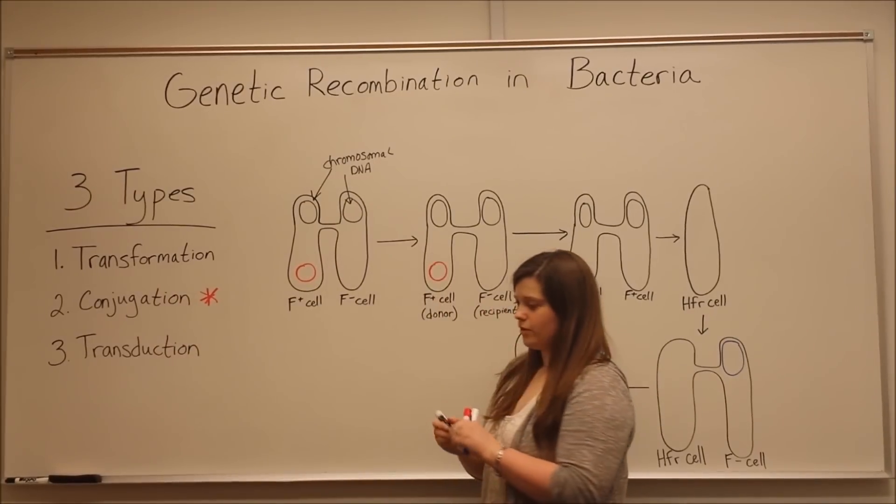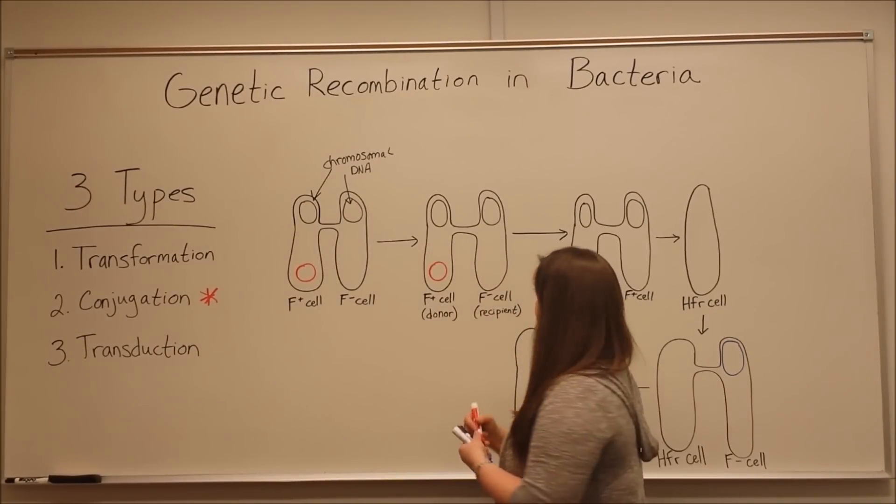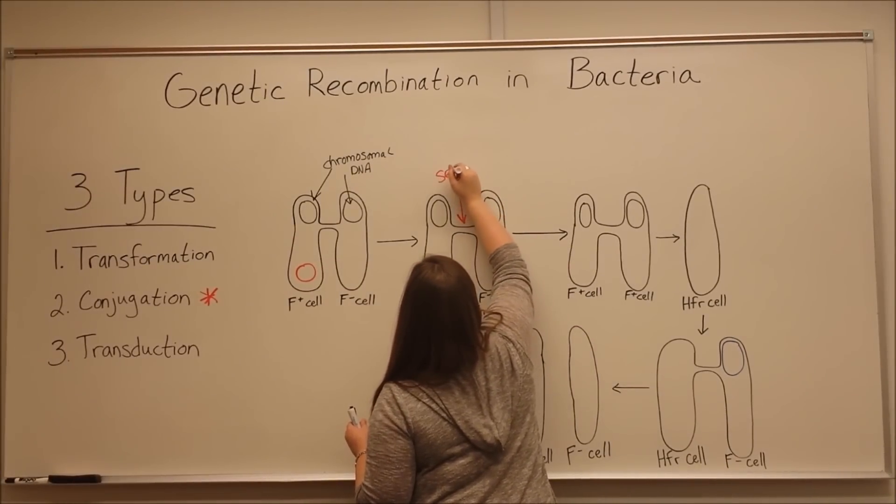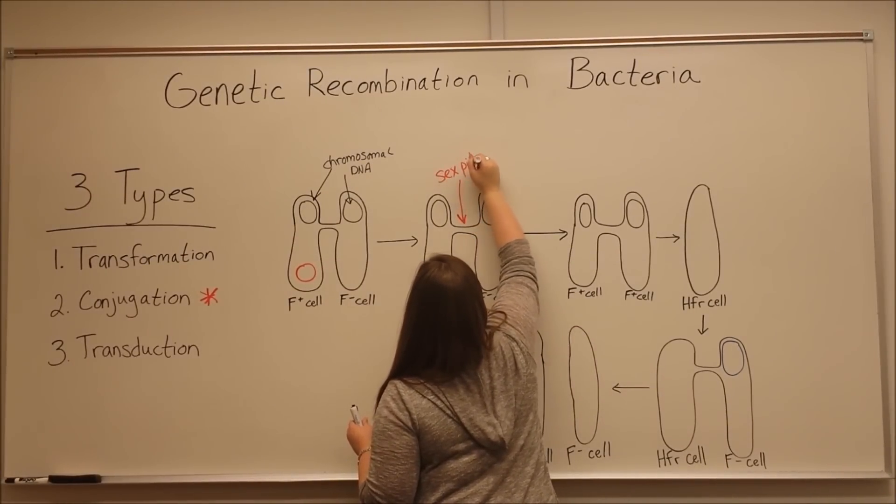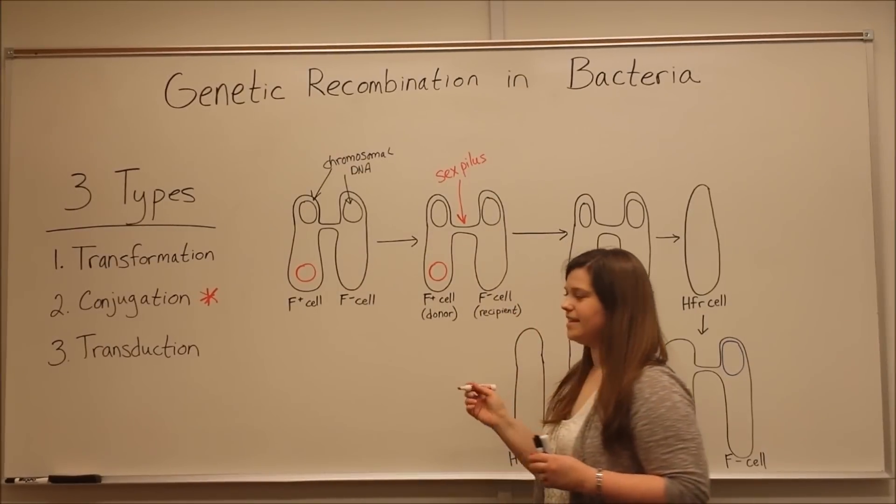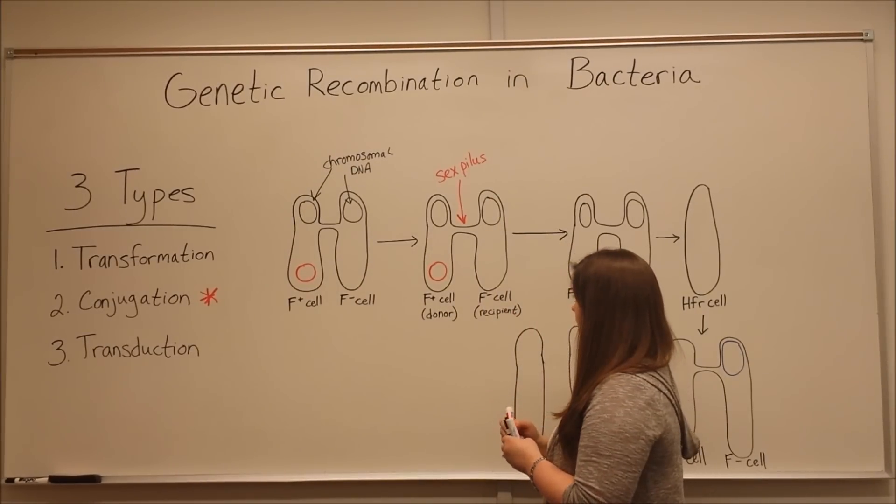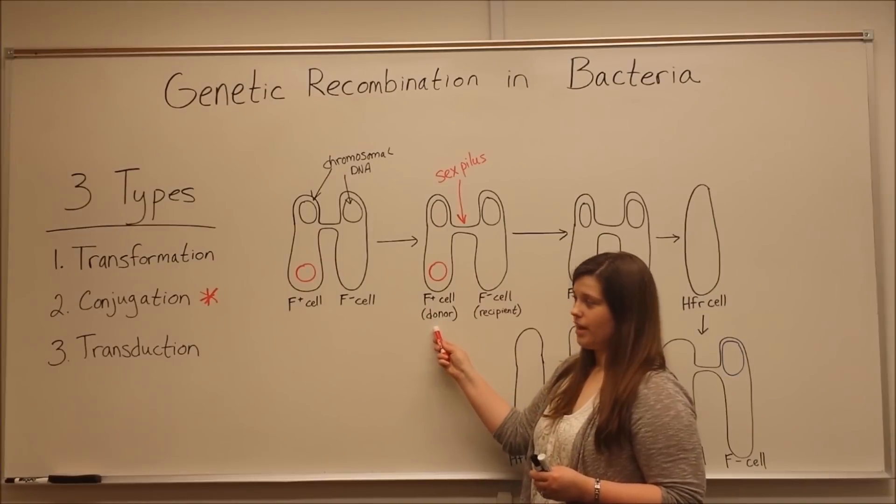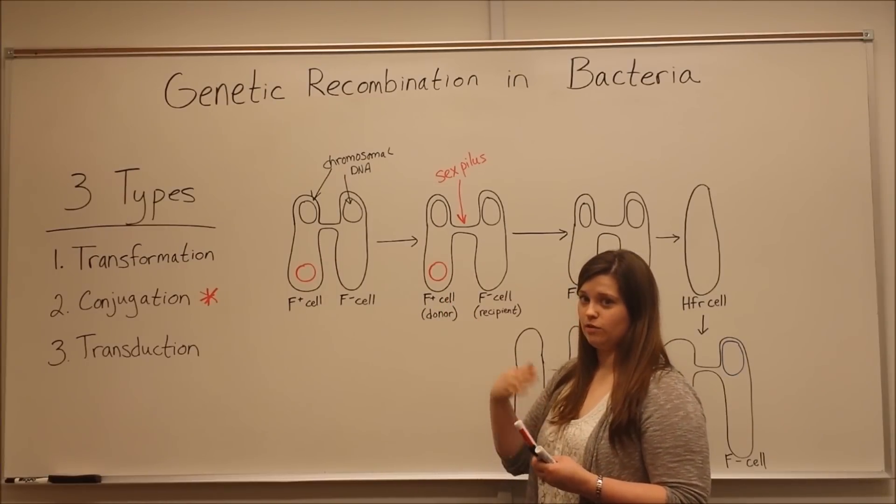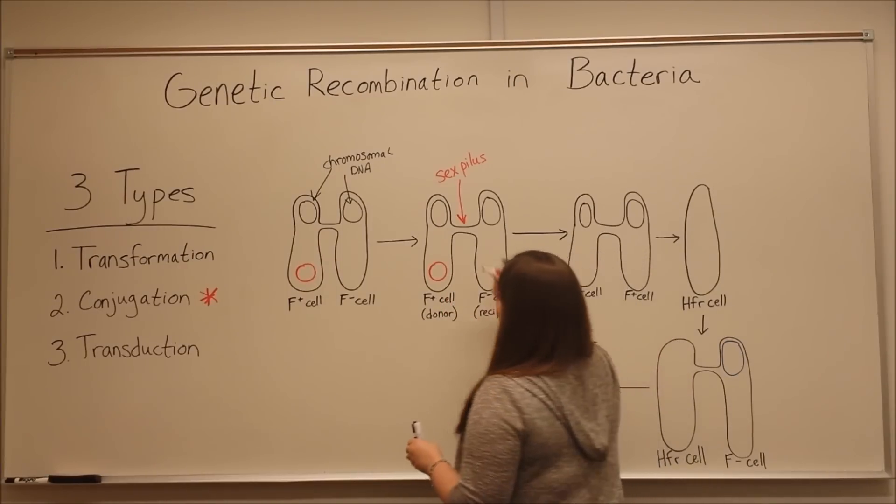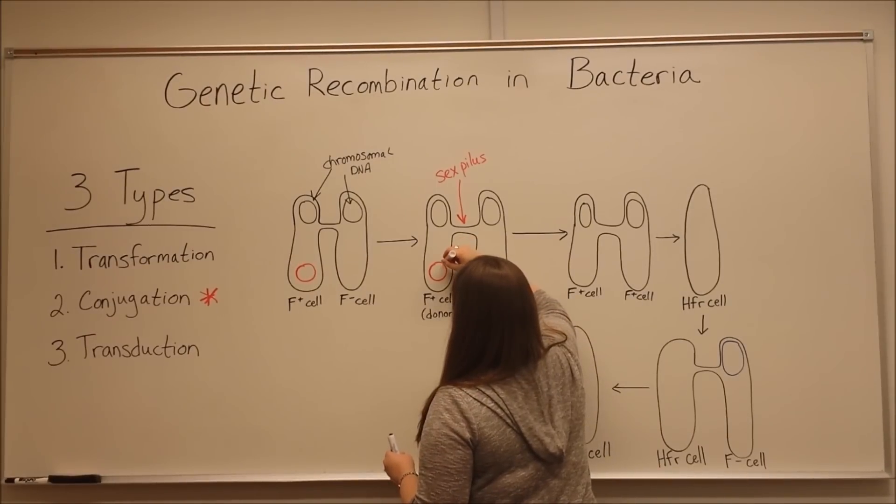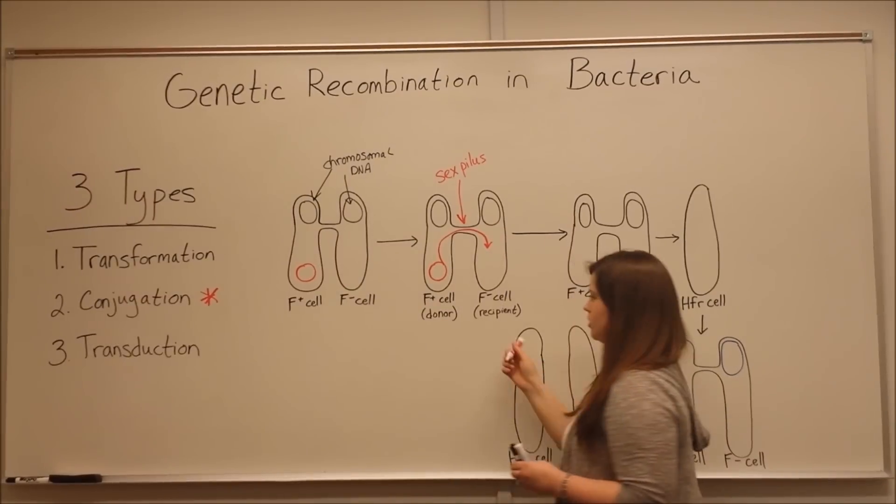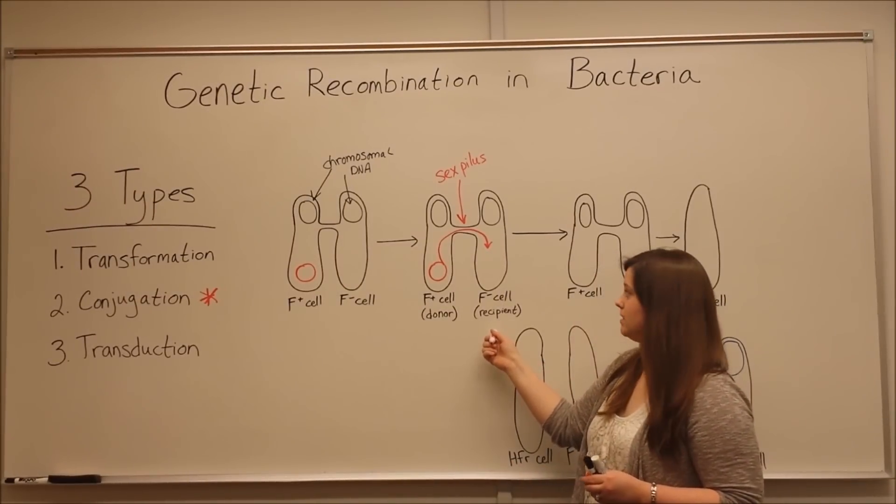The fertility plasmid codes for the sex pilus, which enables the direct cell-to-cell contact needed for conjugation. The F-plus cell is the donor cell. It contains the fertility plasmid that replicates itself, and then the copy goes through the sex pilus and enters the recipient cell's cytoplasm.